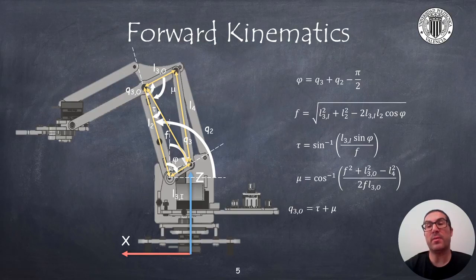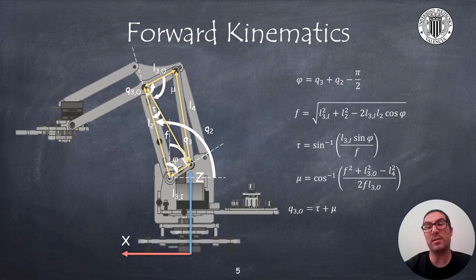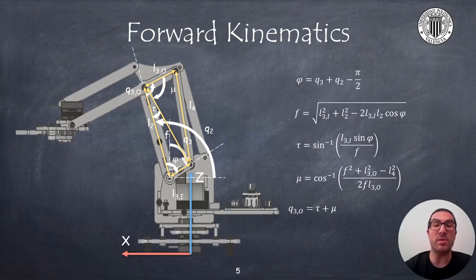Then, dividing this triangle formed with sides l2f and l3i into two right triangles, then we can obtain the angle tau. Also, using the cosine theorem, we can compute the angle mu, which implies that now we can compute the angle q3o that was required in the previous formulas.